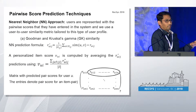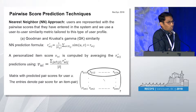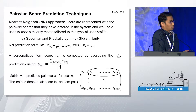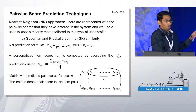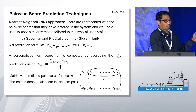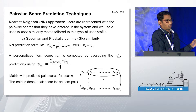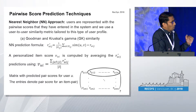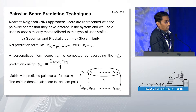We have user profiles with pairwise preferences, and we use a similarity metric called Goodman and Kruskal Gamma which is applied to both profiles. It checks the number of agreements and disagreements and uses these two numbers to calculate a user similarity score.